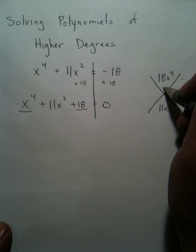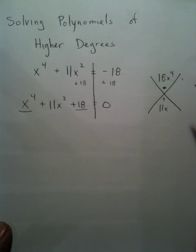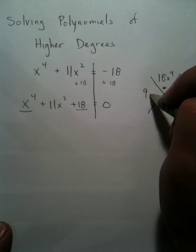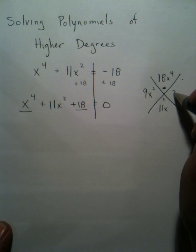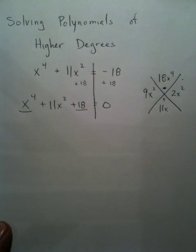What two numbers multiply to 18 and add up to 11? Well, 9x² and 2x² happen to make your magic X complete.